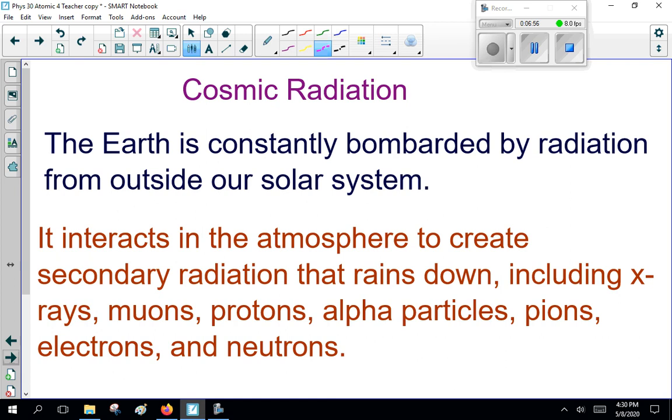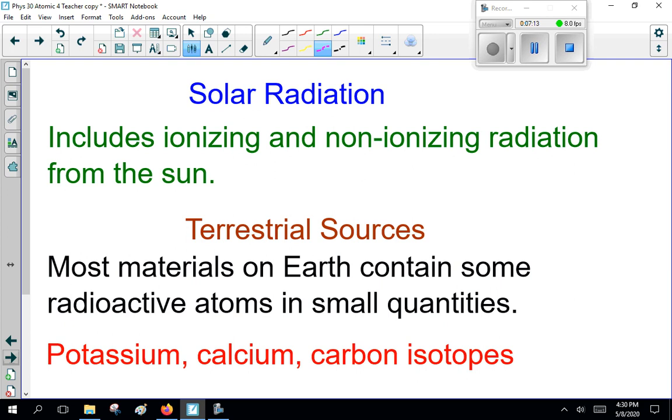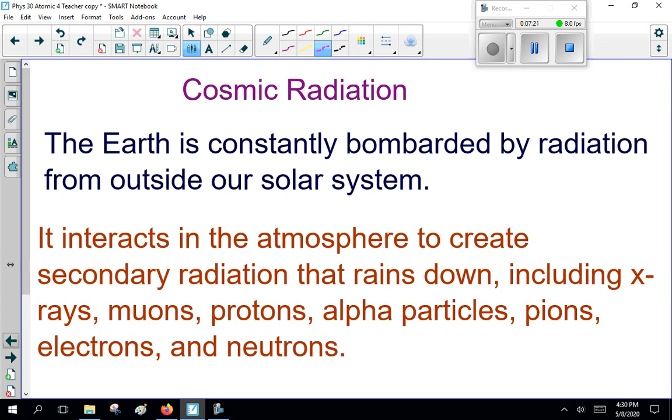Now, cosmic radiation. The Earth is constantly bombarded by radiation from outside our solar system. It interacts in the atmosphere to create secondary radiation that rains down, including x-rays, muons, protons, alpha particles, pions, electrons, and neutrinos. Also, it's lovely stuff. Now, of course, you see that, sorry, I'm getting ahead of myself.